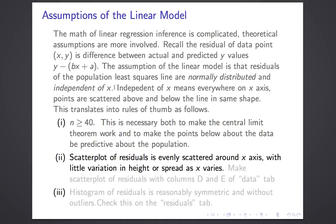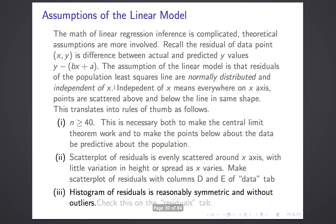The notion that residuals should be independent of x is checked by looking at the scatter plot of residuals — plotting the x variable against the residual variable. Each individual has a residual for this least squares line, so it's a numerical variable. We look at that scatter plot to confirm it looks independent. We also check that the residuals are reasonably symmetric and without outliers, which is built into the residuals tab.